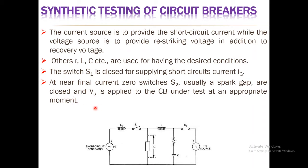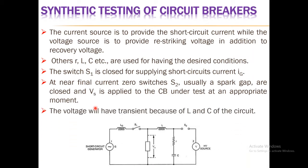At near final current zero, switch S2, usually a spark gap, is closed and the voltage VS is applied to the circuit breaker under test at an appropriate moment. This is the basic flow of conducting a synthetic test. The name 'synthetic' is given because two different sources are used — the composition of two different sources — and the voltage will have a transient component due to the L and C of the circuit.